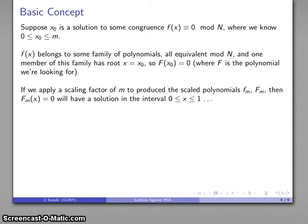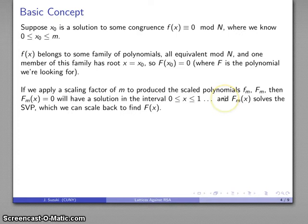Now, what we're going to do is we're going to apply a scaling factor, produce a scaled polynomial, and then our scaled polynomial will have a solution that's in the interval between 0 and 1. And, as it turns out, this scaled polynomial will be a solution to the shortest vector problem, and then we can scale it back to find F of X. We could solve the equation for X zero, and that'll give us a solution to the congruence.